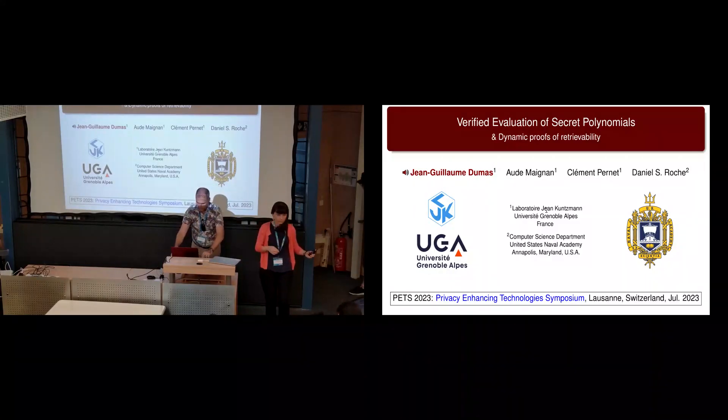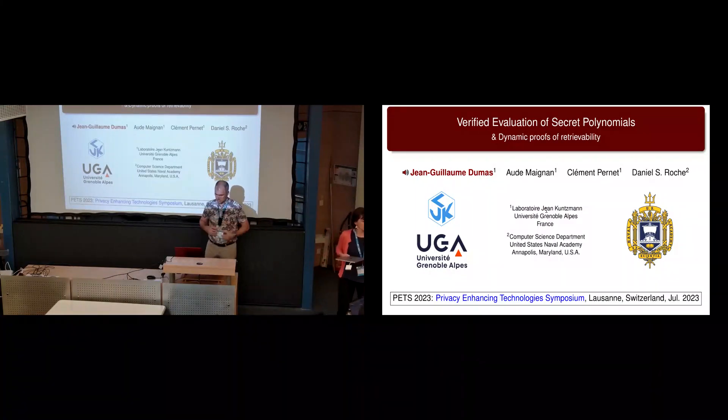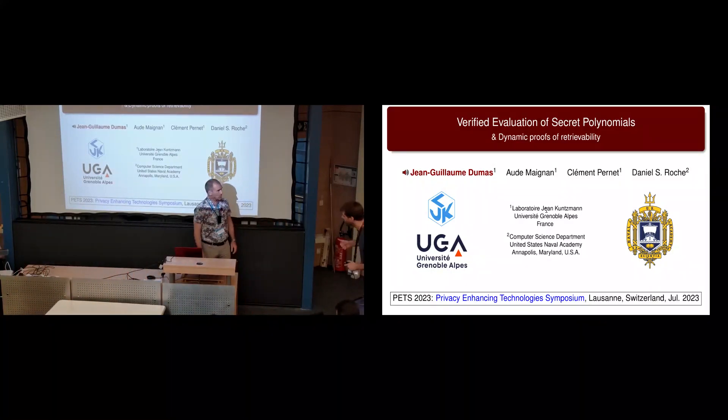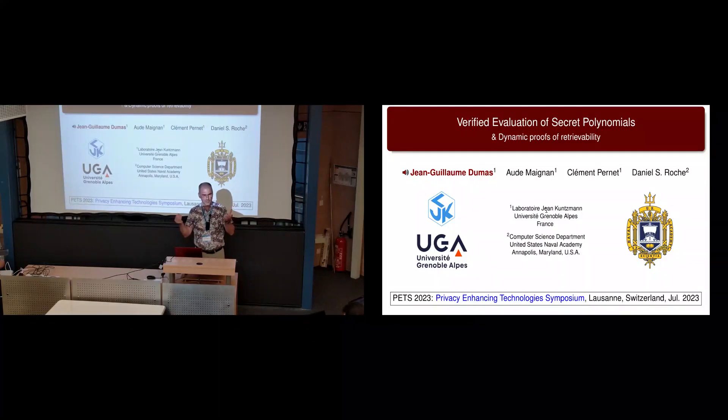We move on to our next presenter with verified evaluation of secret polynomials and dynamic proofs of retrievability, given by Jean-Guillaume Dumas. The presenter two talks ago was discussing polynomial evaluation where the point is secret and the polynomial is known in private set intersection. We're dealing with the converse operation where the polynomial is secret and encrypted, and the evaluation is public, for proof of retrievability.